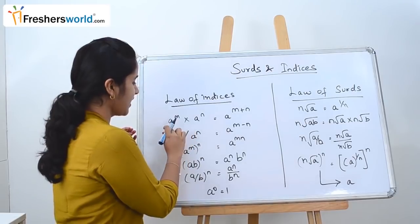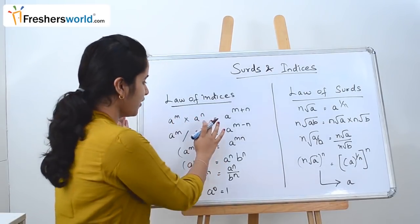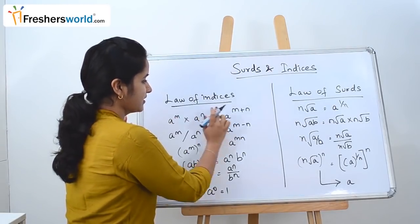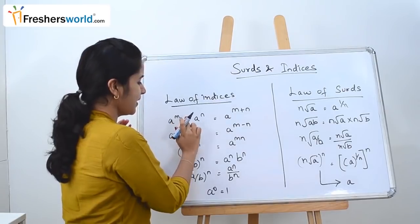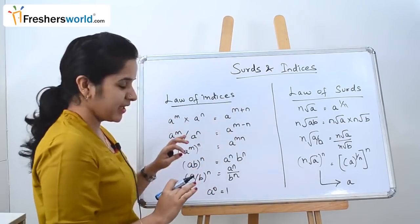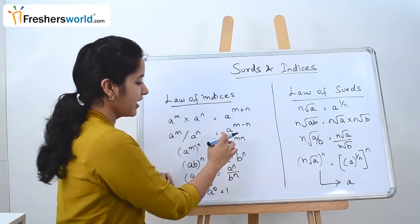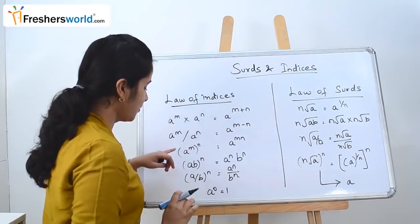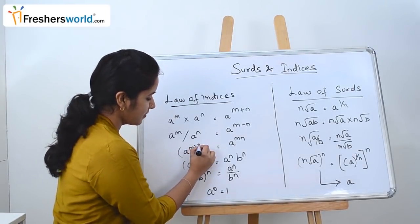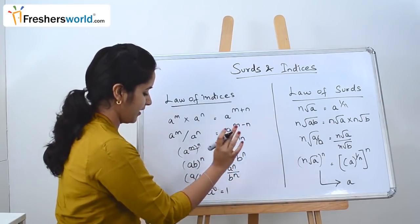The first law is A power M into A power N. When you have a question like that, you have the common base, so you take that and then add your powers. So it becomes A power M into A power N equals A power M plus N. Similarly, A power M divided by A power N is nothing but A power M minus N. Next, A power M the whole power N is nothing but A power M into N.